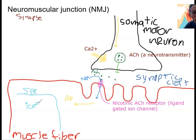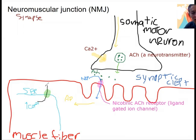When the action potential reaches the sarcoplasmic reticulum, it's going to open voltage-gated calcium channels on the sarcoplasmic reticulum. This allows calcium to flow out. Calcium flows out because levels are high inside the SER and lower inside the cell, so calcium flows into the sarcoplasm of the muscle cell. High calcium inside the cell is going to initiate contraction.